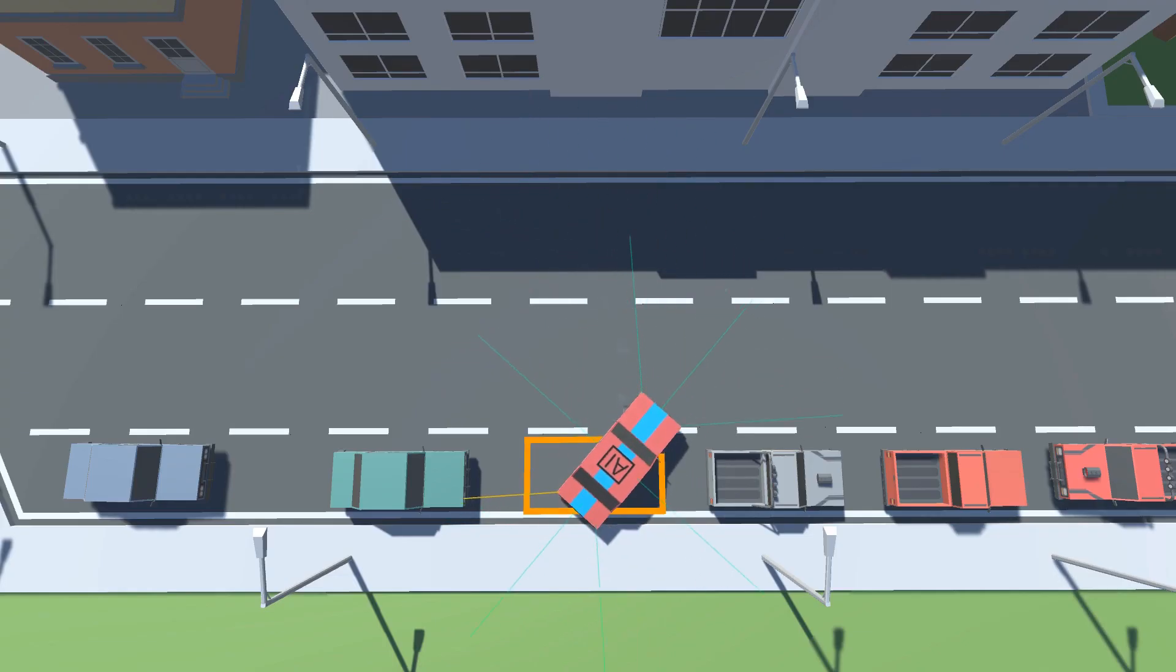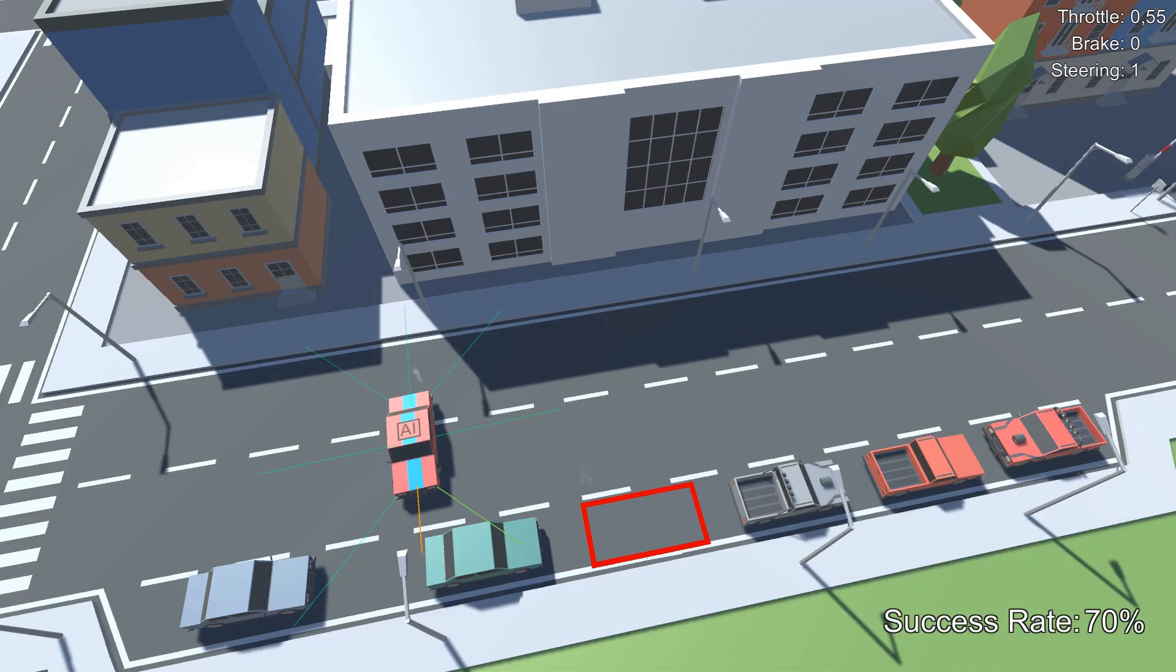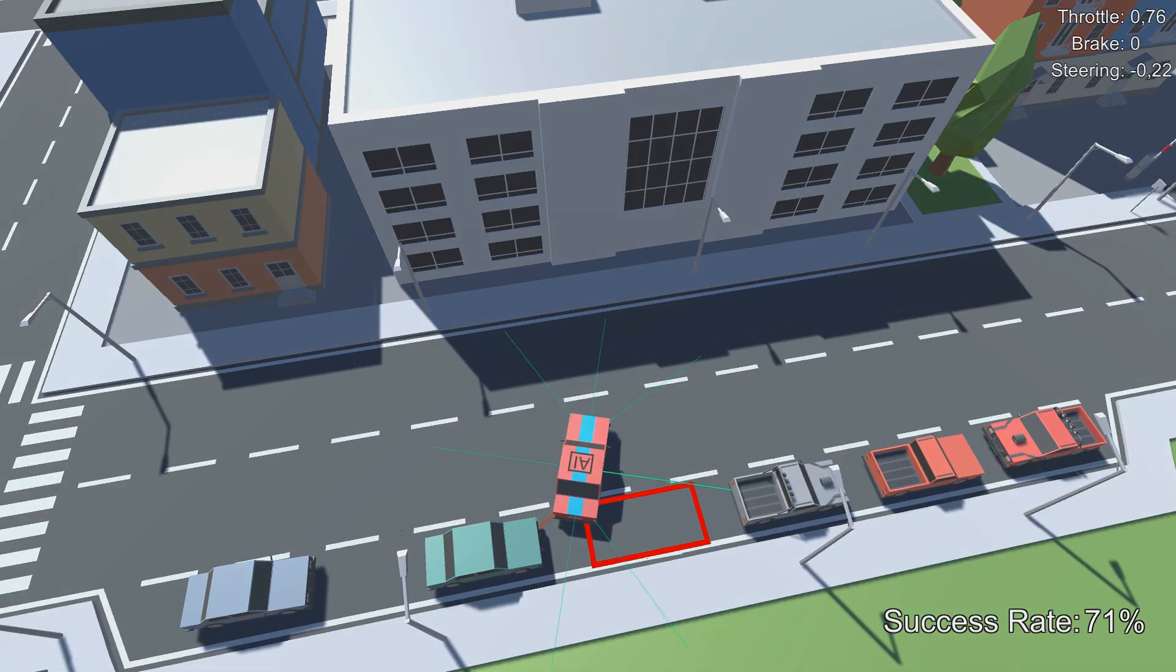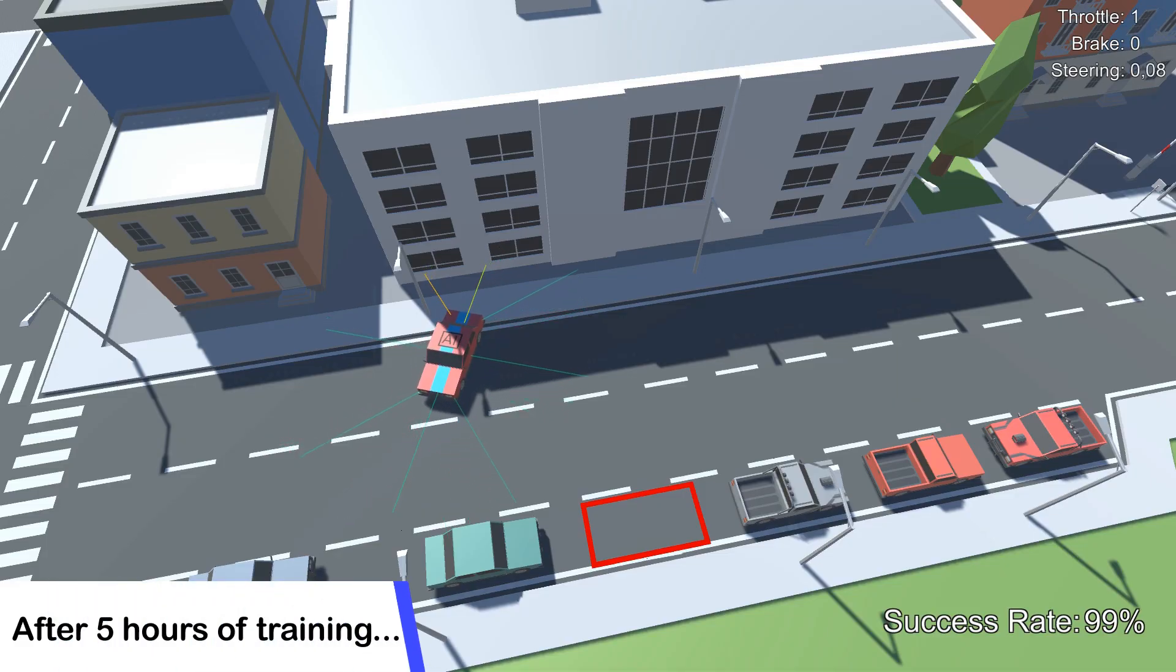Keep in mind that I completely restarted the training after each of these small changes, mainly in order to make sure that the agent is actually performing better because of these changes and not because it is training for a longer time. Speaking of longer training times, I then decided to keep the environment settings pretty much the same, but to increase the training time from 3 hours to about 5 hours.